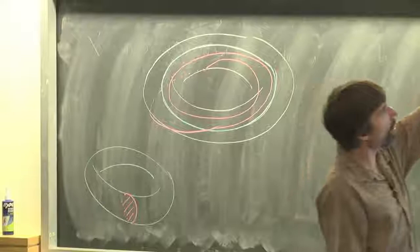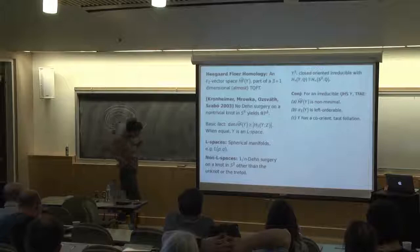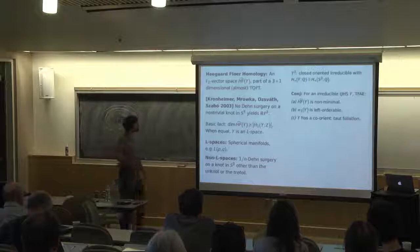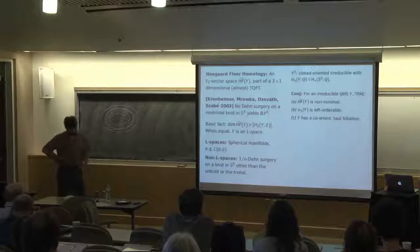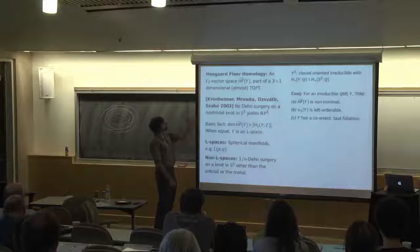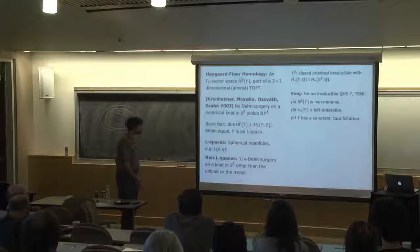One of the things that's great about Heegaard Floer homology — these kinds of Dehn surgery questions go back a long way, and there were certainly the Thurstonian tools, hyperbolic geometry, and things like character varieties. They have important things to say about Dehn surgery, but there are certain classes of questions which have been sort of completely impenetrable from the point of view of hyperbolic geometry. Fortunately we have this orthogonal tool which allows you to answer some of them, and there's been a lot of consequences of this theory.